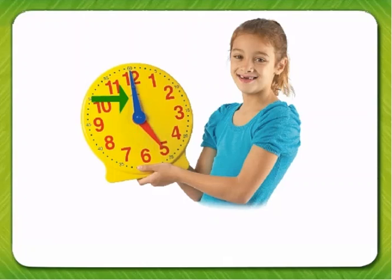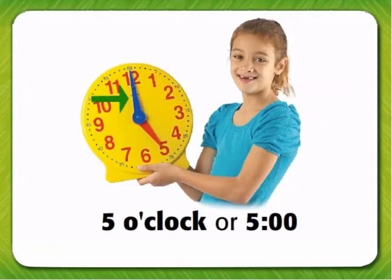The blue hand is longer. It is the minute hand. We show the hour first. The hand is on five. The minute hand is on twelve. That means it is five o'clock.